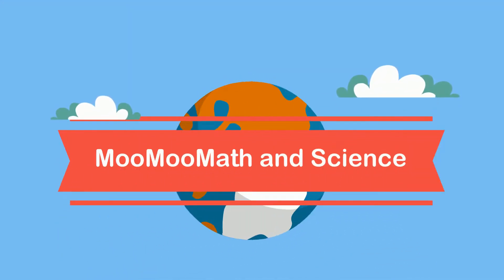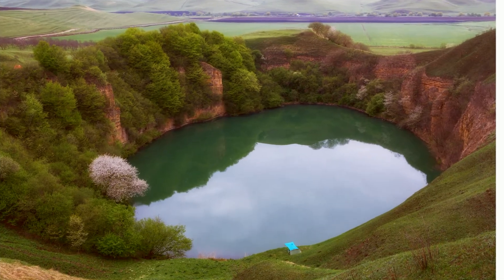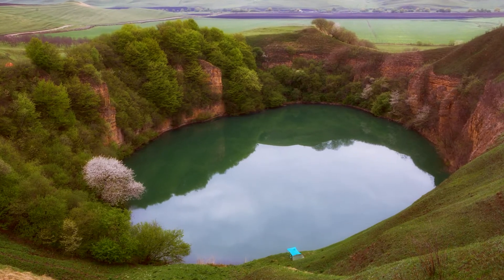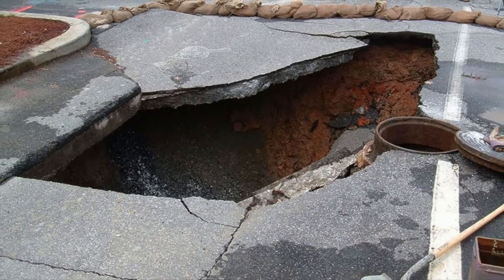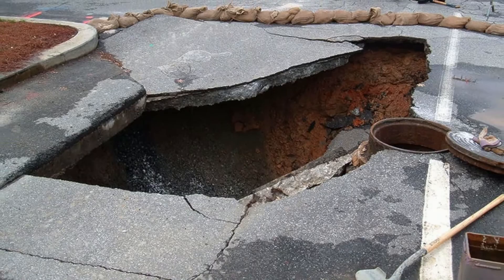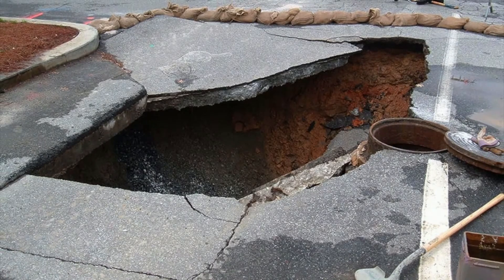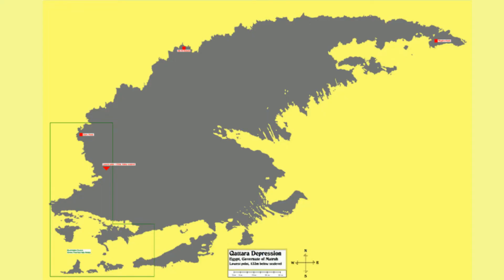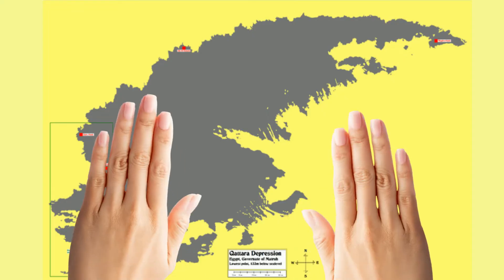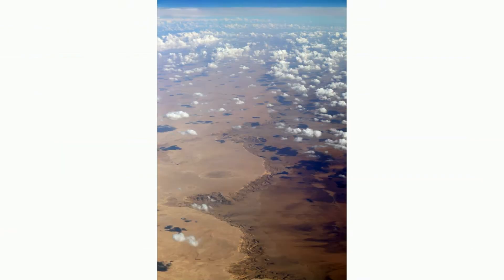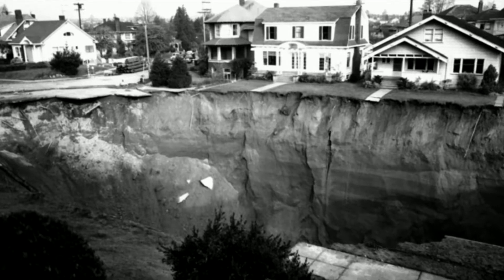A sinkhole is basically a hole that is opened up. They can be as small as a few meters or as large as the Vas Katara sinkhole west of Cairo, Egypt, which measures 80 kilometers long by 120 kilometers wide. Sinkholes can be scary and destructive.